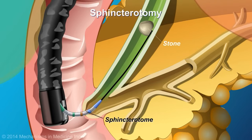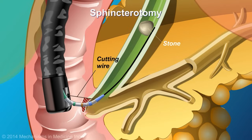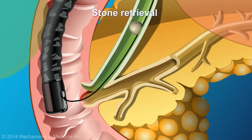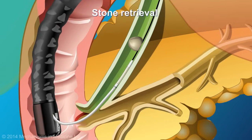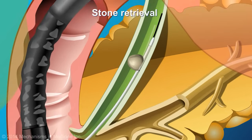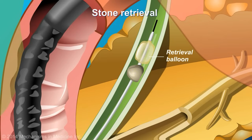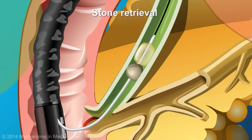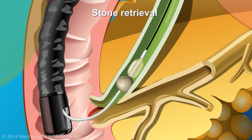If a stone is identified in either the pancreas or biliary tree, it can be removed by cutting the sphincter muscle within the major papilla. This is called a sphincterotomy. The stone is removed by pulling it out of the duct and into the small bowel, using a balloon to sweep and clean the duct. It can then pass out safely with the stool.